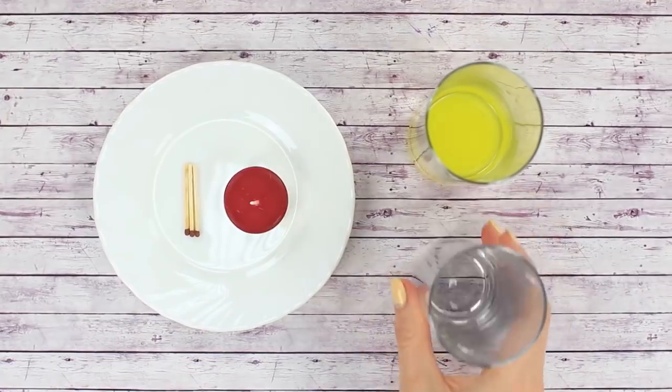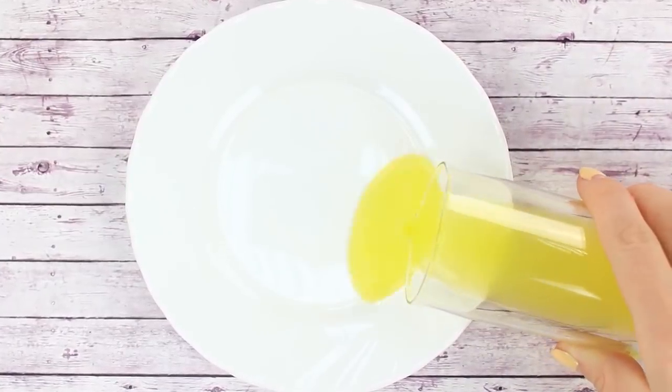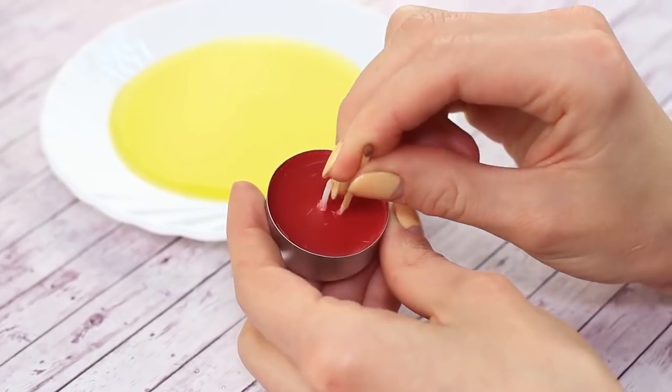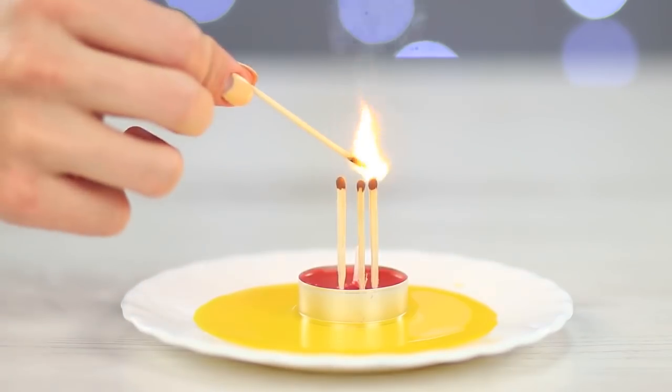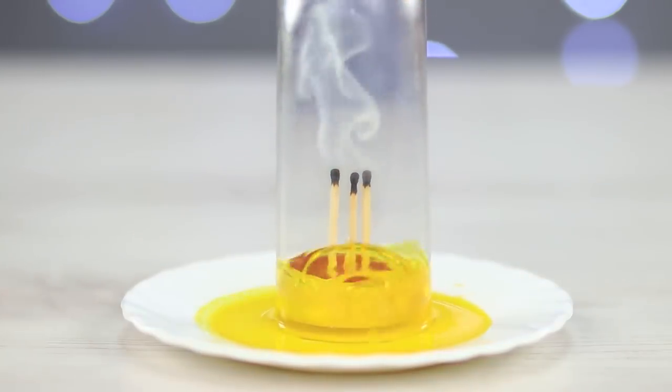For the next trick, we'll need some water, a candle, a few matches and an empty glass. We've added some food coloring to enhance the effect. Pour the water on a plate. Stick the matches in the candle, then place it in the center of the plate. Light the matches on fire and cover with an empty glass. The water gets sucked up inside the glass and the candle rises. Cool!